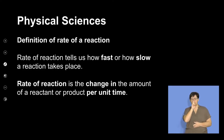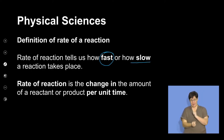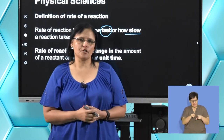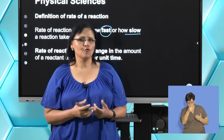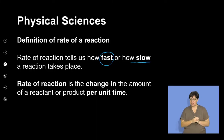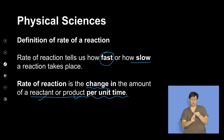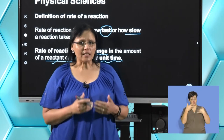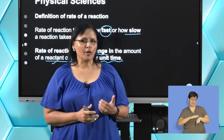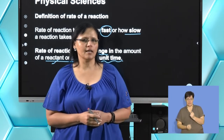The rate of reaction is how fast or how slow a reaction is. There is a definition in the guidelines document that you must study for your exam: the rate of reaction is the change in the amount of your reactant or product per unit time. Whenever you answer anything on rates of reaction, you need to refer to per unit time.